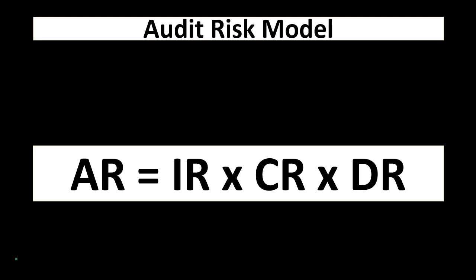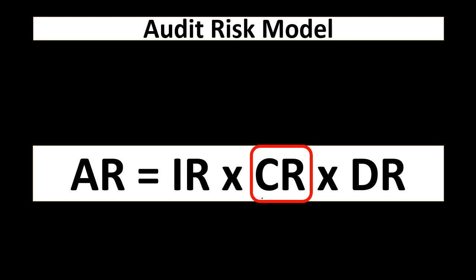Regarding the audit risk model: audit risk equals inherent risk times control risk times detection risk. Inherent risk is the risk inherent in the organization or type of business. Control risk is what we've been discussing — what the business designs into its system. Detection risk is whether the audit will pick up any problems. Inherent and control risk are on the business side; control risk is what we focus on here when considering the overall audit risk model.